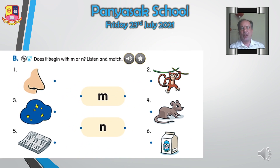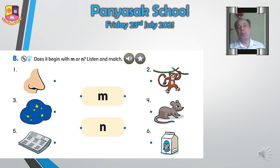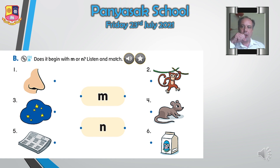Okay, that's the sound. M makes the 'mmm' sound and N makes the 'nnn' sound. You put your tongue up in your mouth for N. And for M, you close your mouth — mmm.